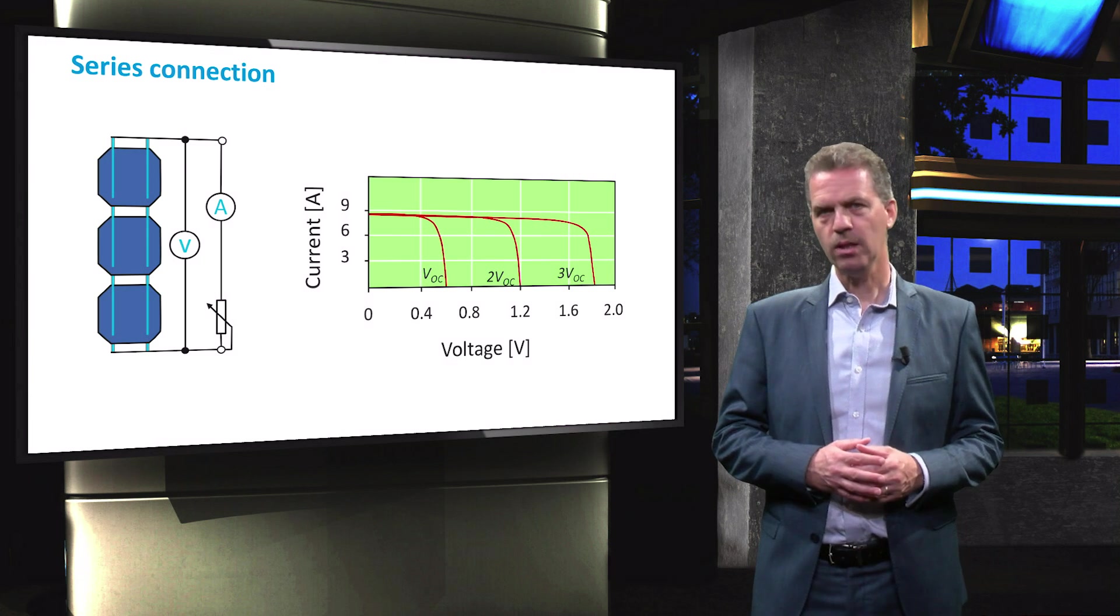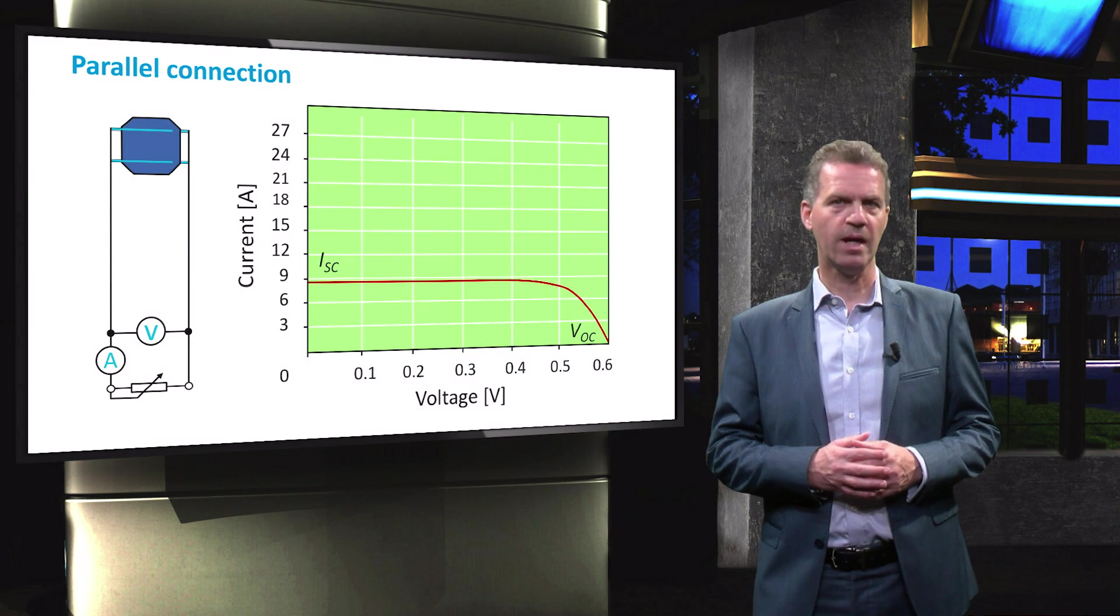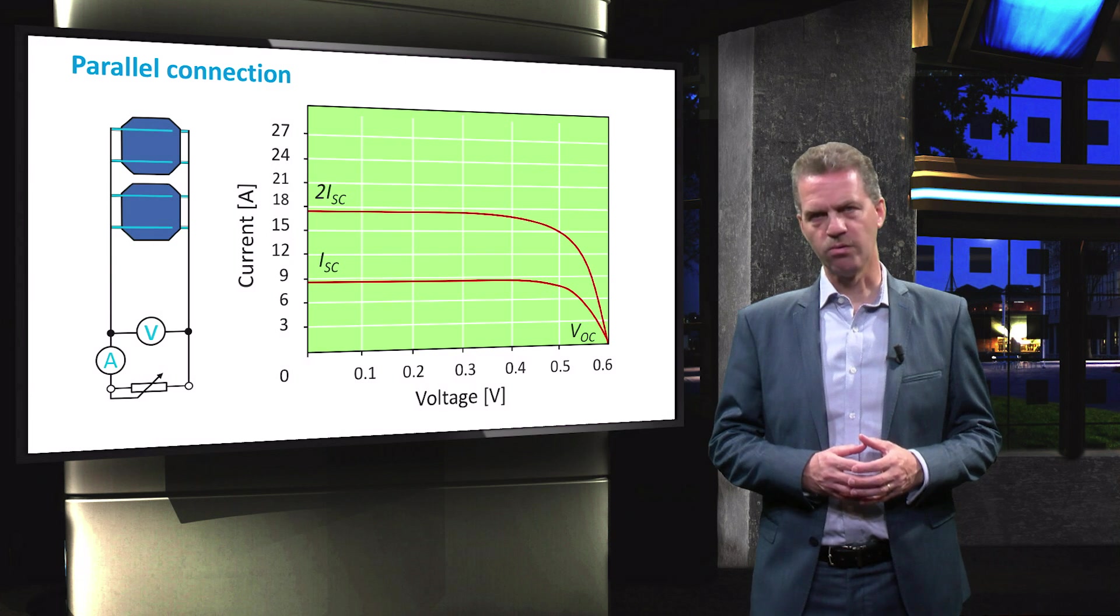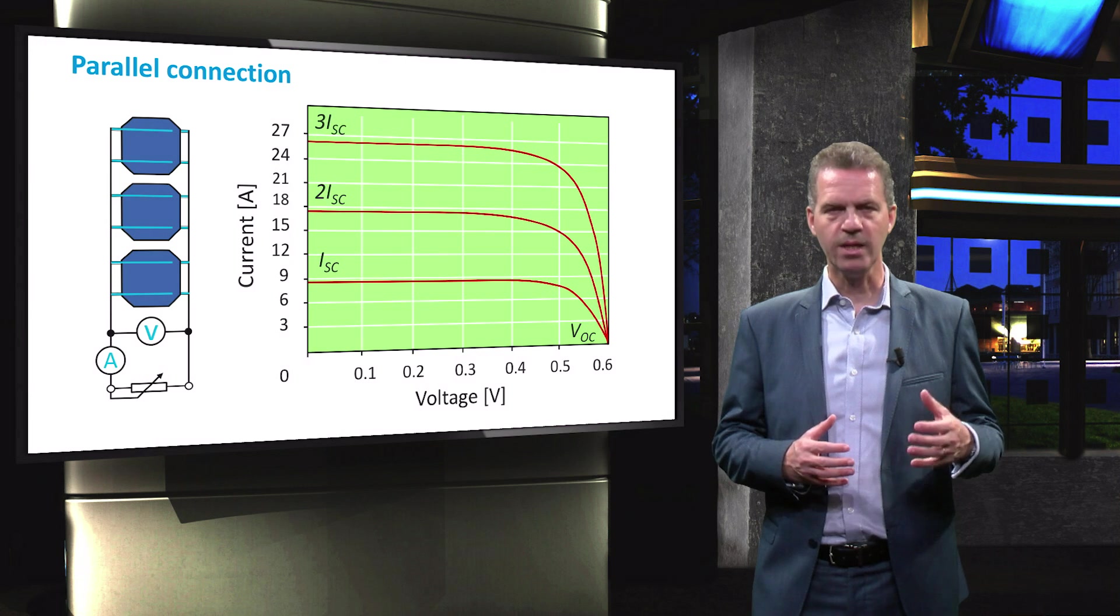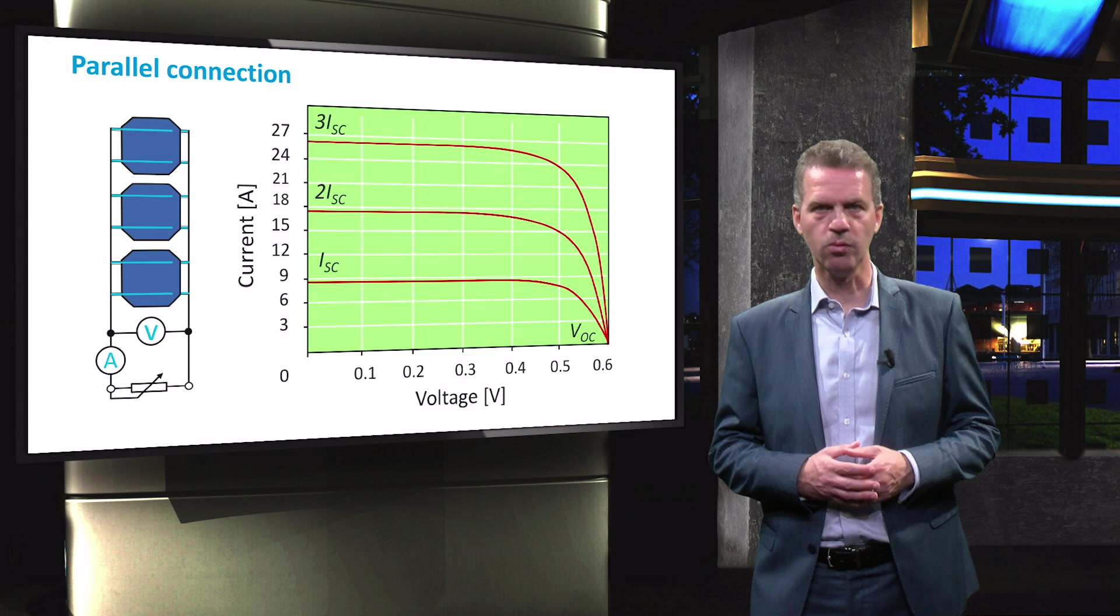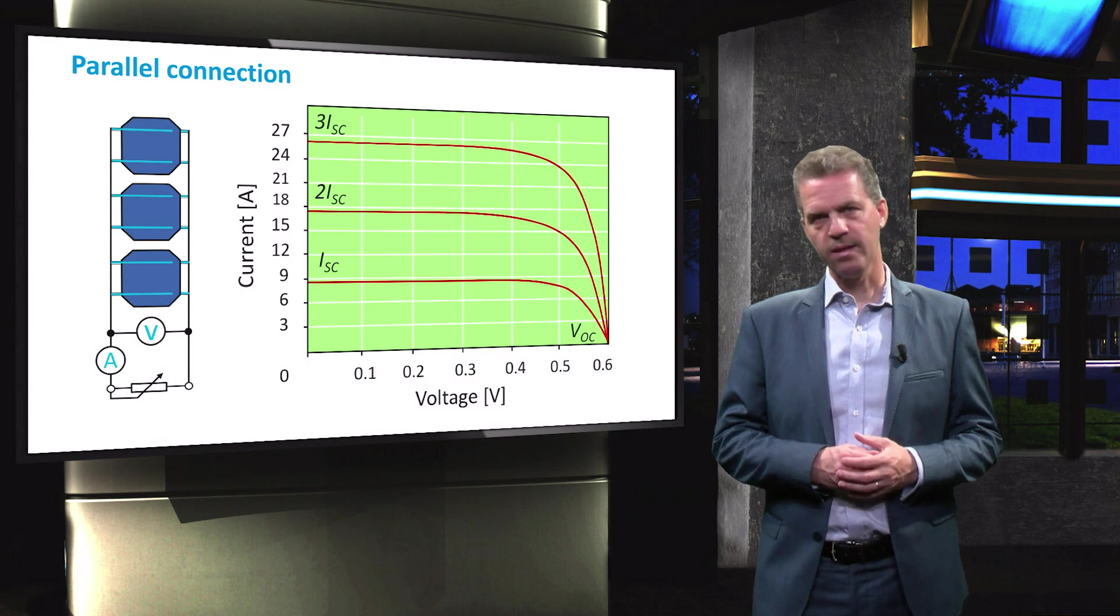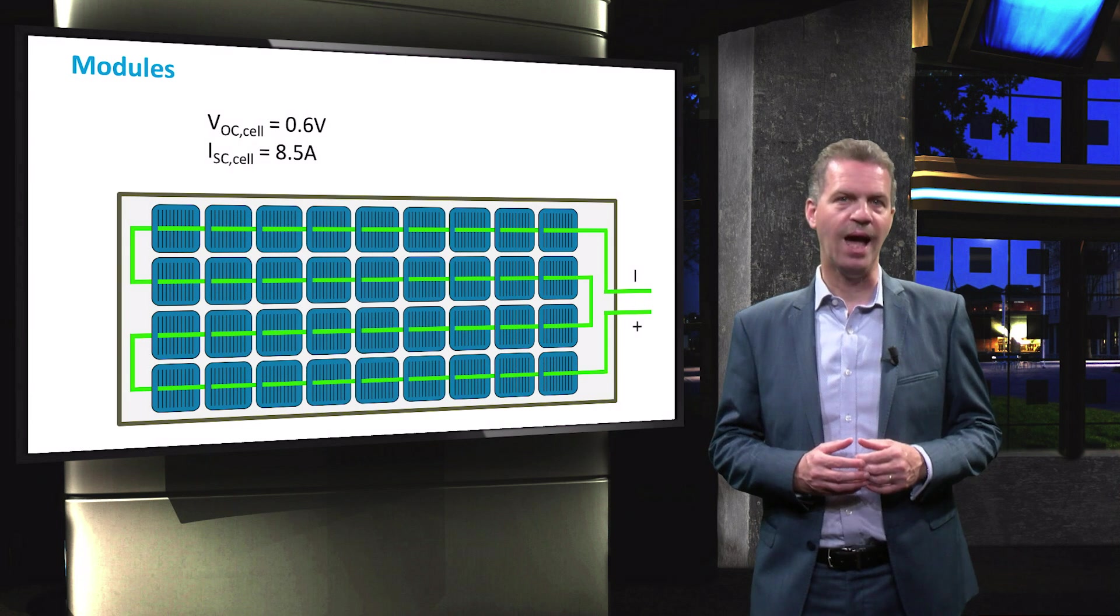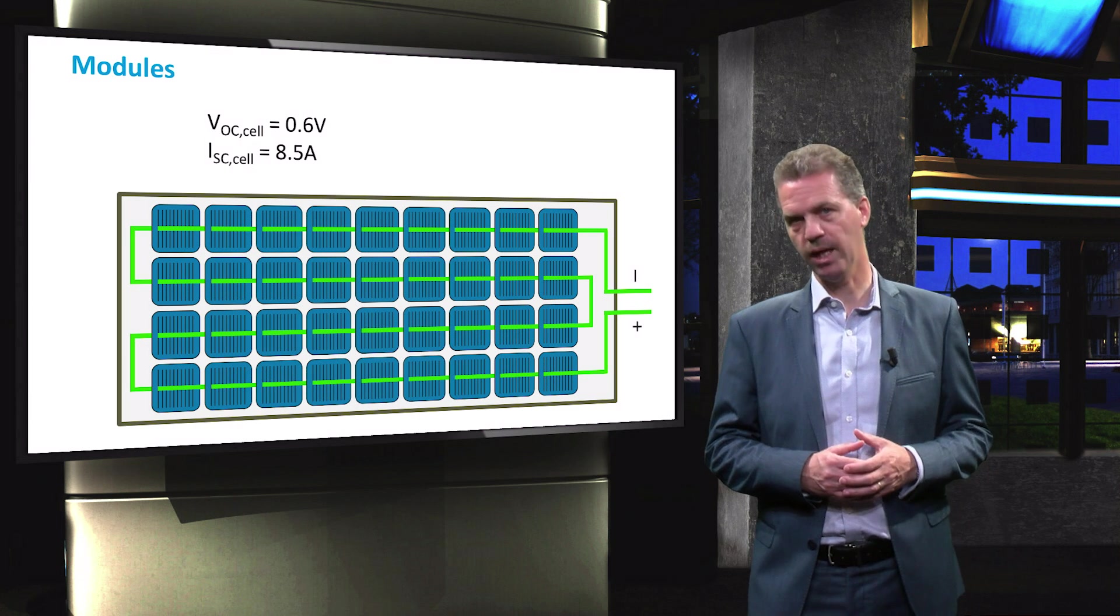In a parallel connection, the voltage is the same of all cells. Now, the current produced by the cells adds up. Adding the IV curves of the three solar cells will then give a total of 3 times ISC of current, while the voltage of the circuit is equal to the VOC of one cell. This means that if we consider a module, we can partly tune the voltage and the current output by choosing series connection, parallel connection or a combination.